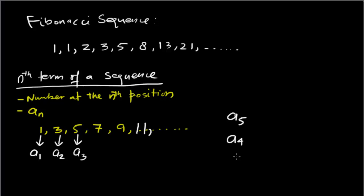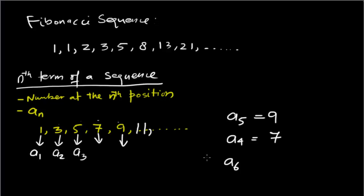The fifth term means the value at the fifth position — one, two, three, four, five — so the fifth term a₅ is nine. The fourth term is the value at the fourth position, which is seven. The sixth term is eleven.